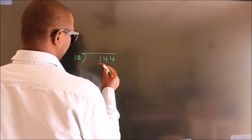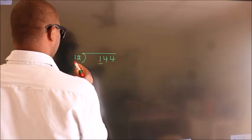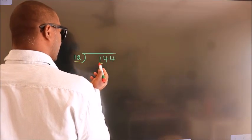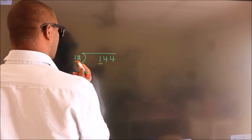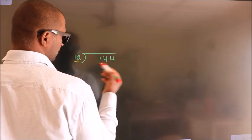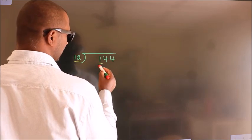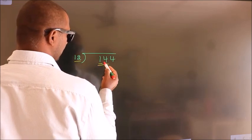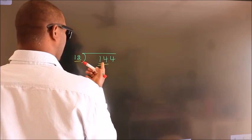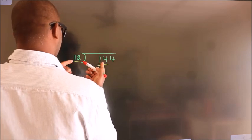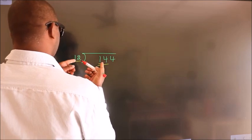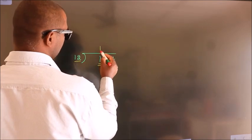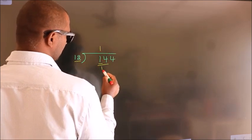Here we have 1, here 12. 1 is smaller than 12. So we should take 2 numbers: 14. A number close to 14 in the 12 table is 12 — 12 once 12.